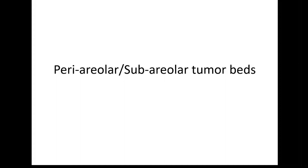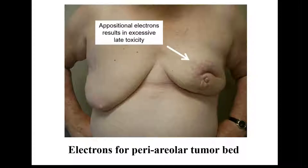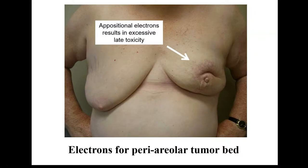One area where I have been so impressed with AccuBoost results is with peri-areolar or sub-areolar tumor beds. Throughout my career I've been frustrated with results from oppositional electrons in this location. A case treated with oppositional electrons shows less than optimal cosmesis — scarring around the nipple with puckering — but more importantly, high radiation dose to the nipple-areolar complex is not well tolerated. These patients are symptomatic persistently afterward, with hypersensitivity, scaling, and irritation.